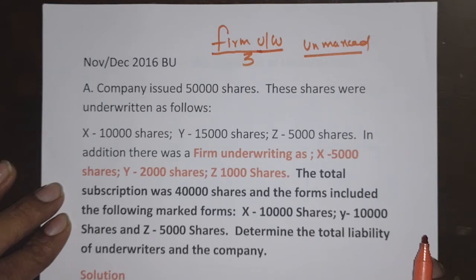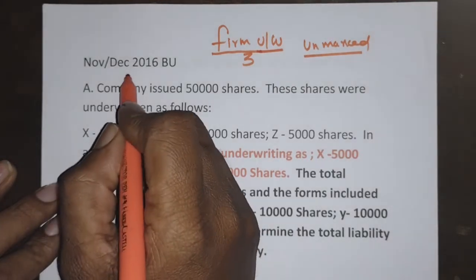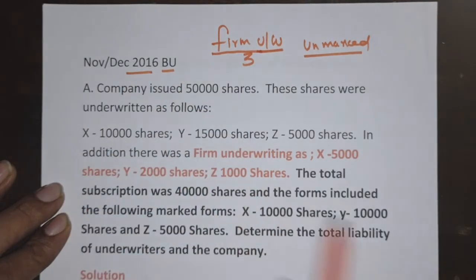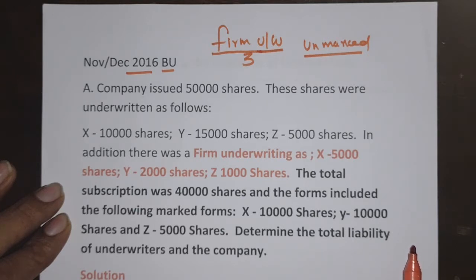What is firm underwriting? Underwriters underwrite an extra number of shares for their own use, irrespective of the number of shares subscribed. The speciality of this 2016 Bangalore University problem is that it consists of both partial underwriting and firm underwriting, so one problem will help you understand both at a time.